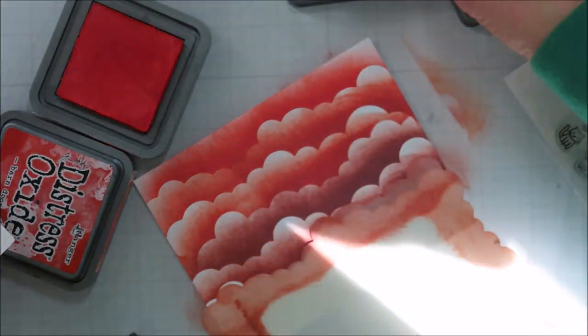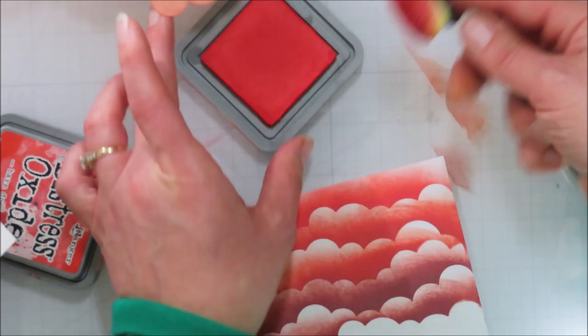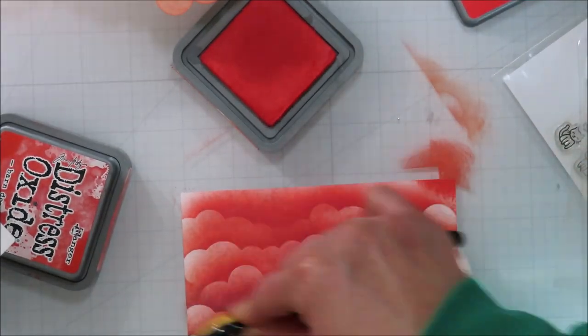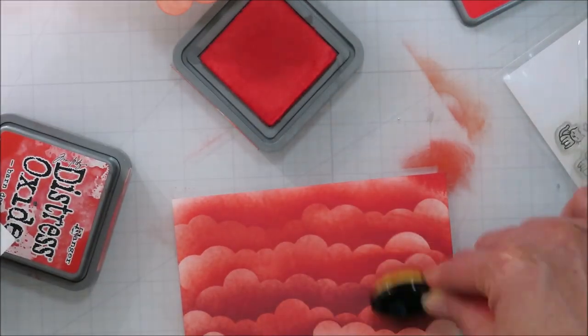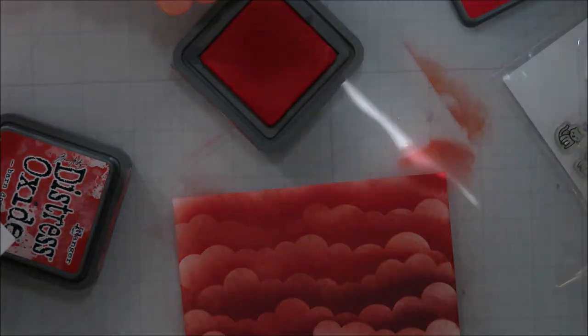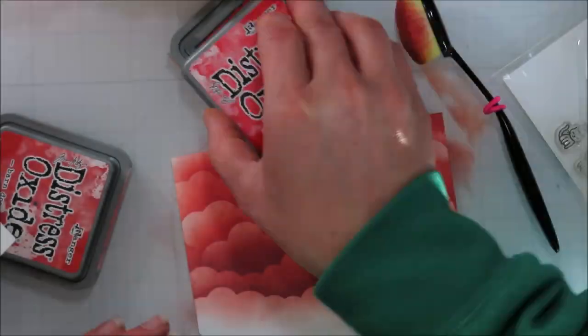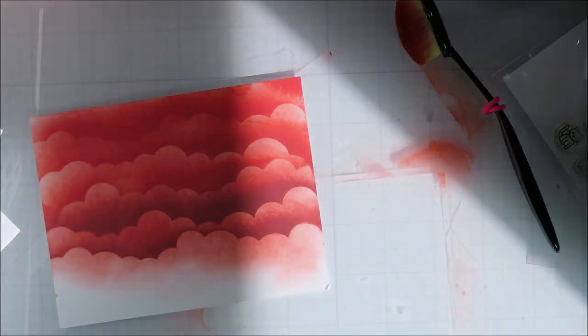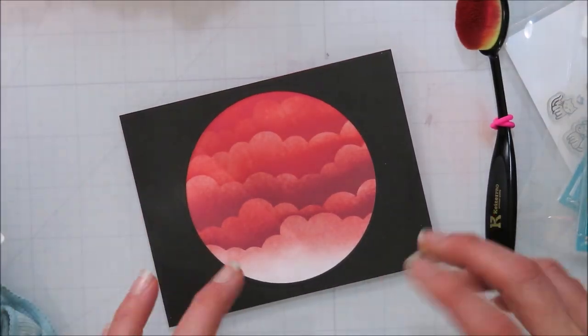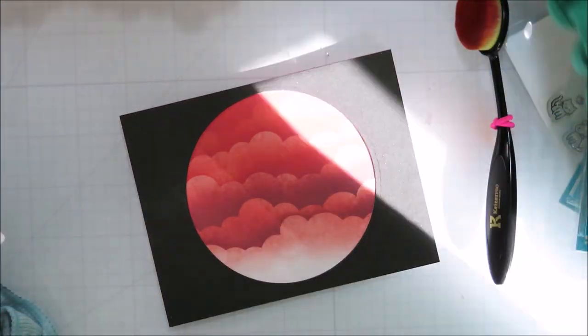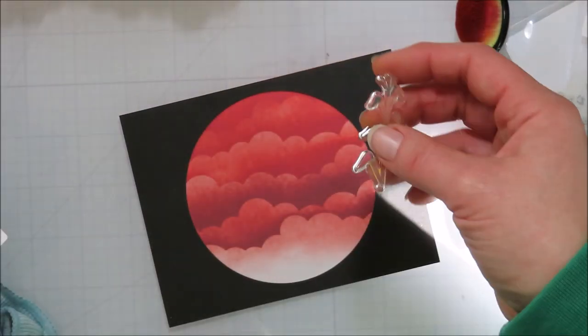And then I'm coming in with candied apple, barn red, and then aged mahogany. And then going over it all again with a layer of that candied apple just lightly to make the white not white. So the lighter areas are still light, they're just not white anymore. So it kind of meshes in with what I was going for, for my scene.